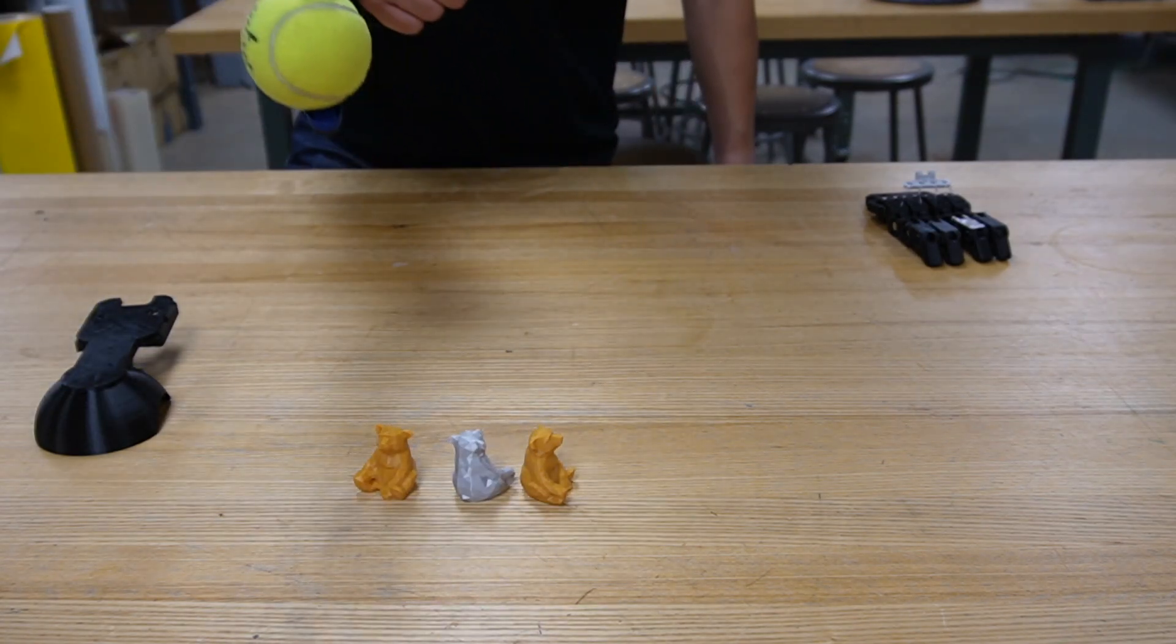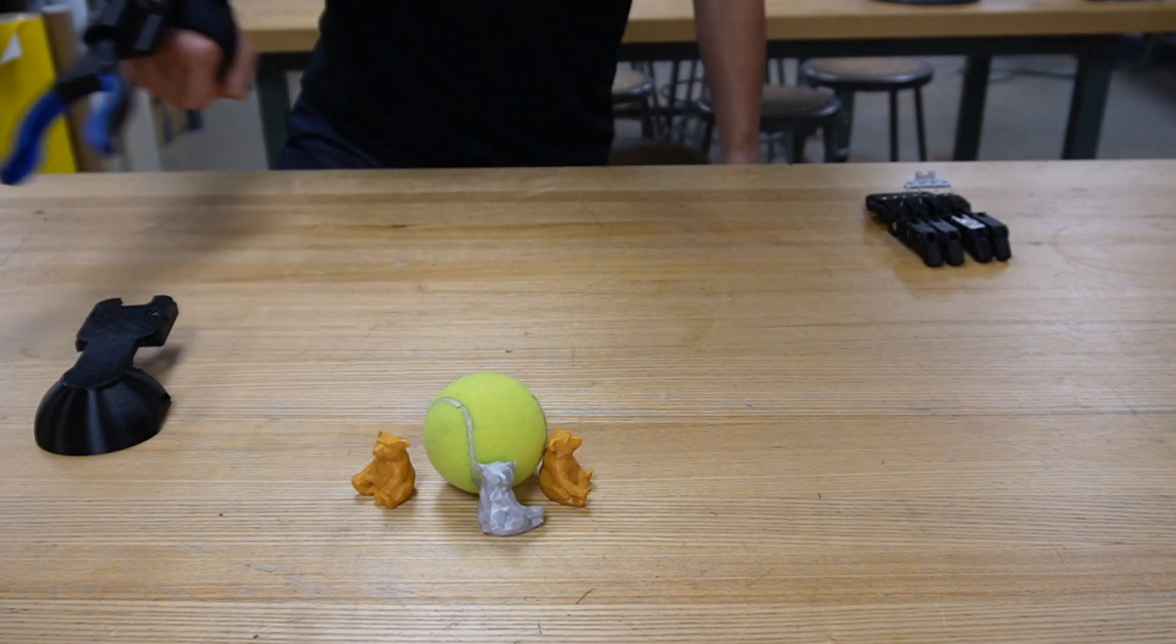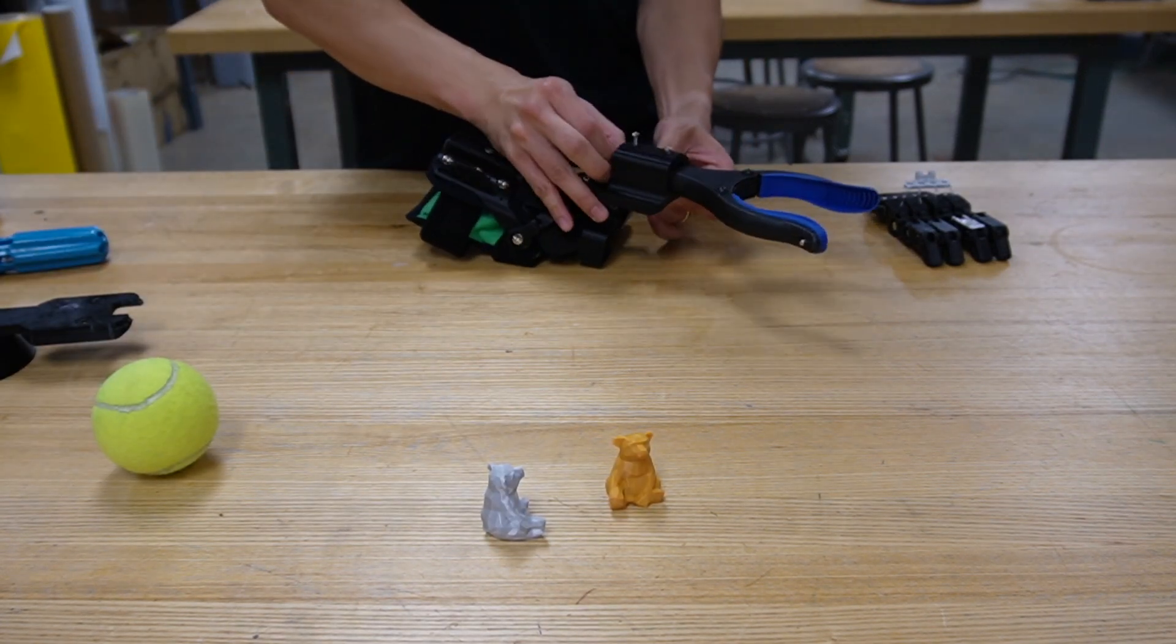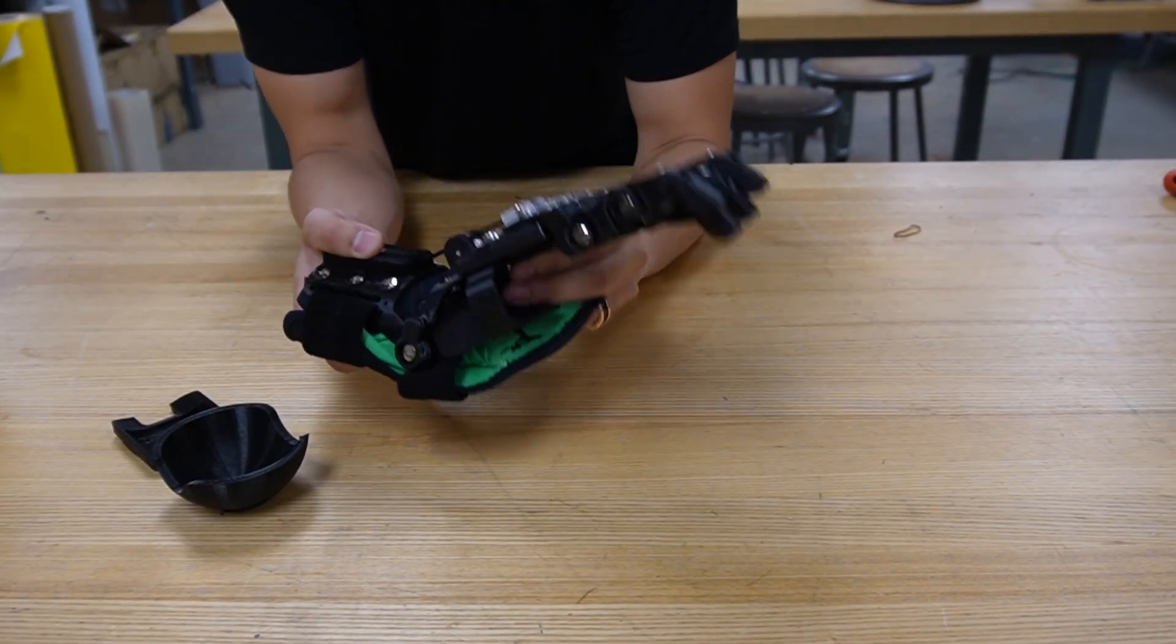The demonstration shows how easy it is to grab things with a simple grabber, and also how easy it is to swap between different modules such as robotic hands.